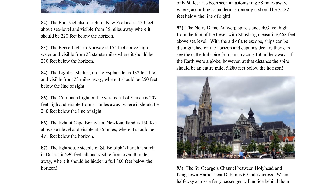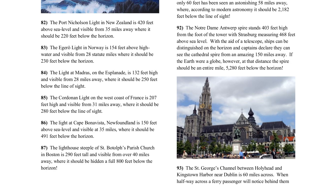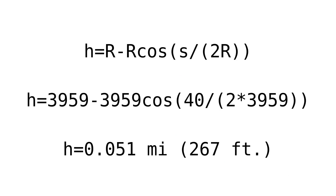The light at Cape Bonavista is 150 feet above sea level, and visible at 35 miles. Whereas the height of the curve is 204 feet, which granted would put it below the horizon at that distance. But how do I know you can actually see it from that far away? I'm not given a source, and I couldn't find any information about this lighthouse's range, so I have my doubts. The lighthouse steeple of St. Botolph's Parish Church in Boston is 290 feet tall, visible from over 40 miles away. The height of the curvature between those two points is 267 feet or so — you should be able to see it.